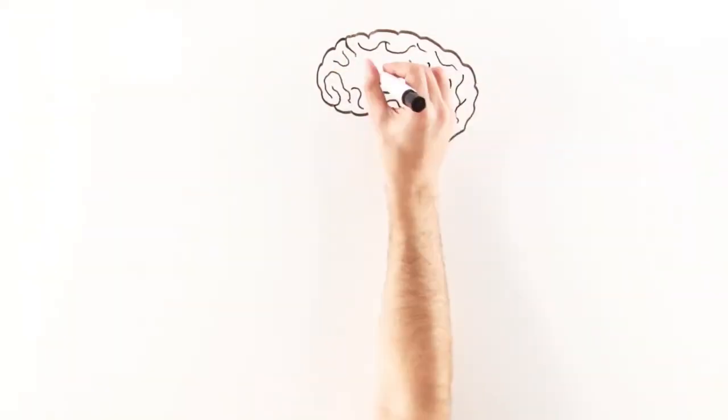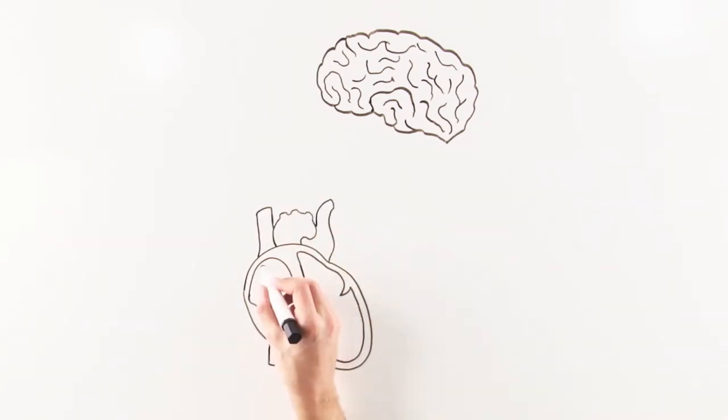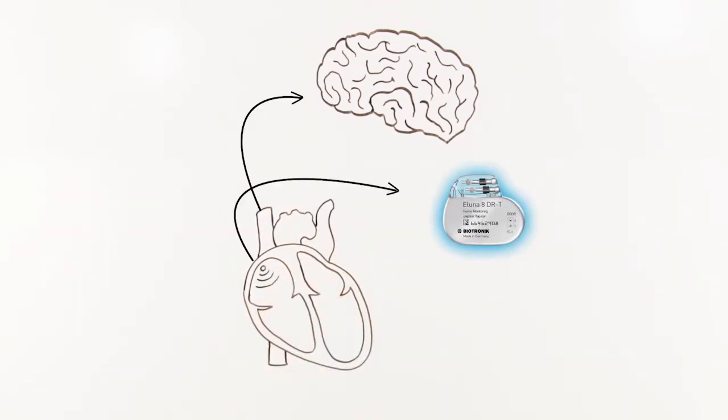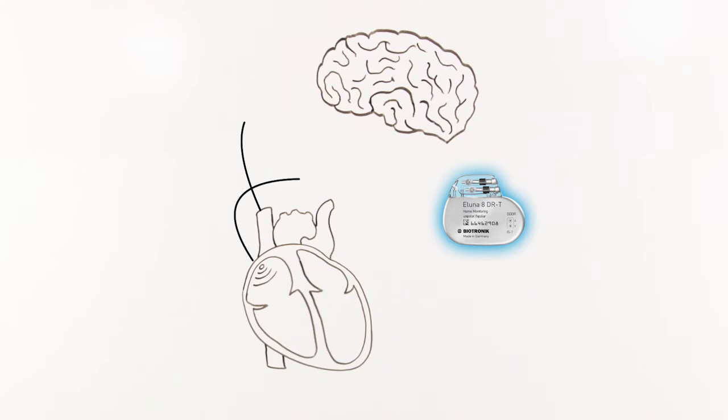Biotronic devices have an additional sensor called closed loop stimulation, or CLS, that tracks changes in the heart's contraction. This means that any time the body requires more oxygen, regardless of activity level, CLS can immediately detect it and turn that into more heartbeats.